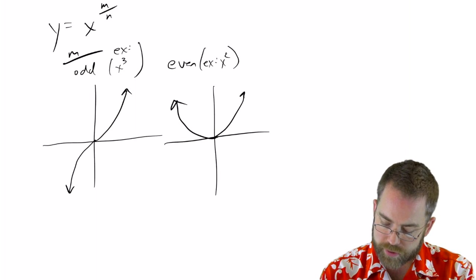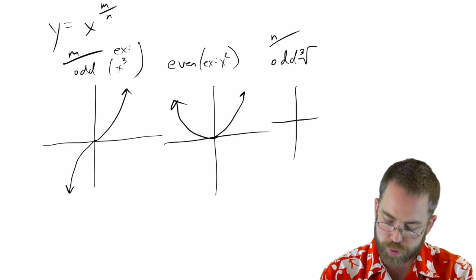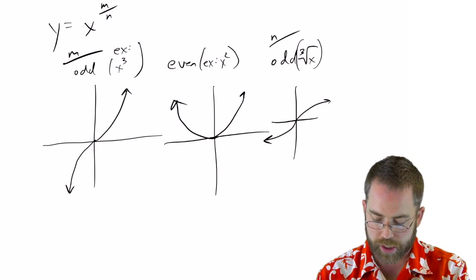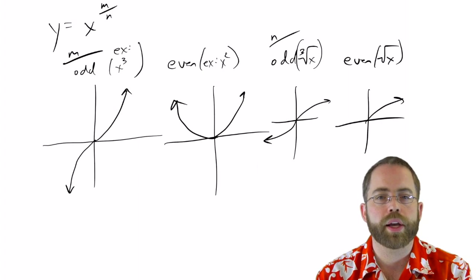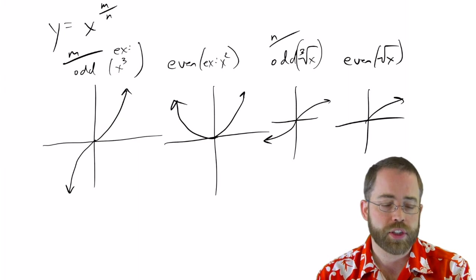And then something very similar happens with the roots. When you've got an odd root, like a cube root for example, then you swoosh left and right—all possible x's and y's. Versus when you take an even root, for example the square root, you can only go to the right. So that should all be review, that should all be things that you've seen before.